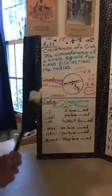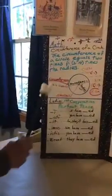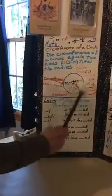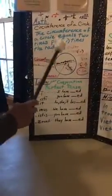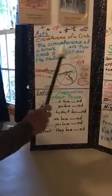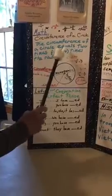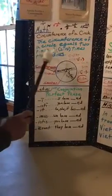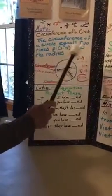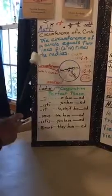Let's start out with math — circumference of a circle. Remember last week I made this diagram. The circumference is the edge of the circle. Last week we did the area; we were finding the area. Now we're finding the circumference of the circle. The circumference of a circle equals two times pi (3.14) times the radius.